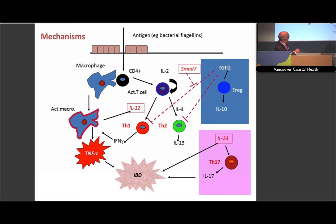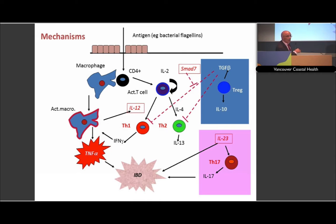We knew early on that interleukin-12, another inflammatory marker, is an important mediator of polarization of lymphocytes. Lymphocytes can be useful — T-regulatory cells — or they can be nasty: Th1, which produces gamma interferon, and Th2, which produces interleukin-13. More recently, we've recognized that interleukin-23 is a problem too. So we have been targeting all of these, and all the drugs targeting these agents are now coming into clinical use. Some of you here may have been involved in clinical trials targeting these particular molecules.